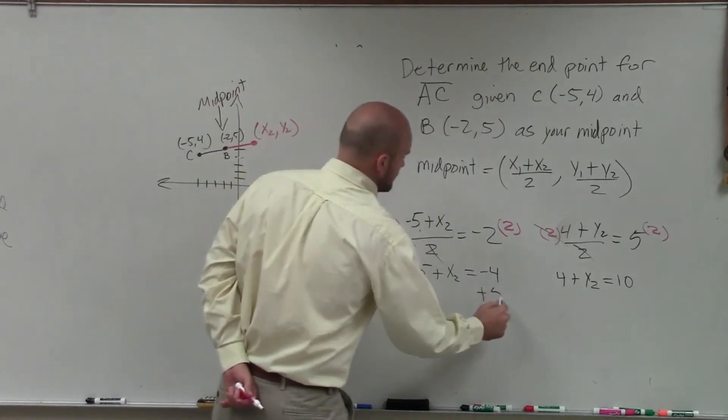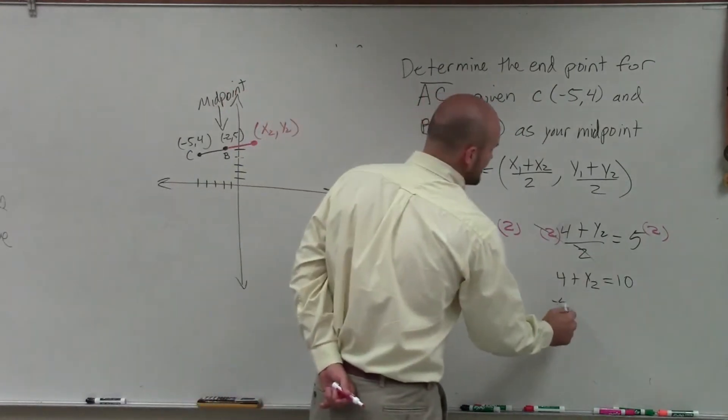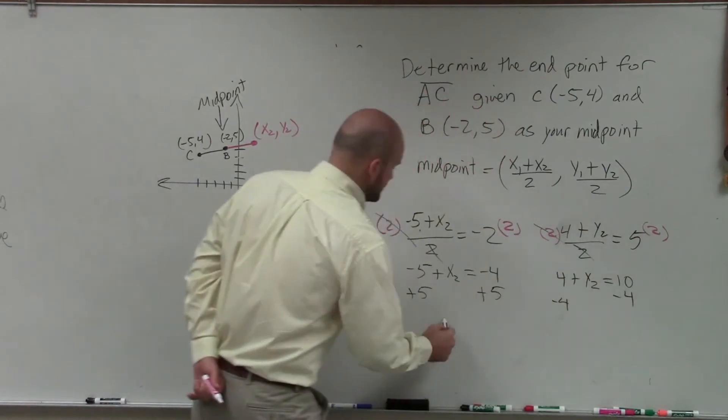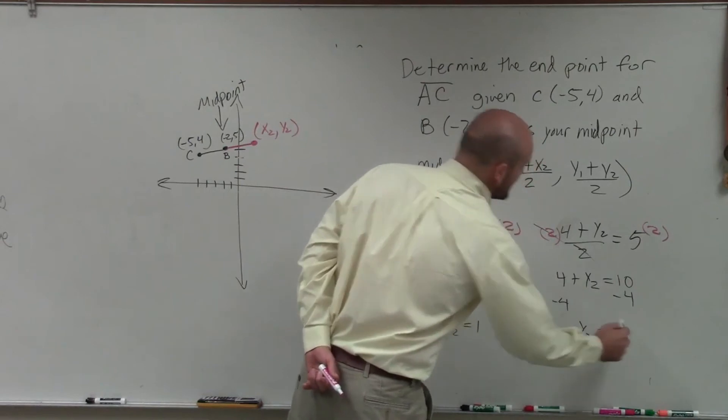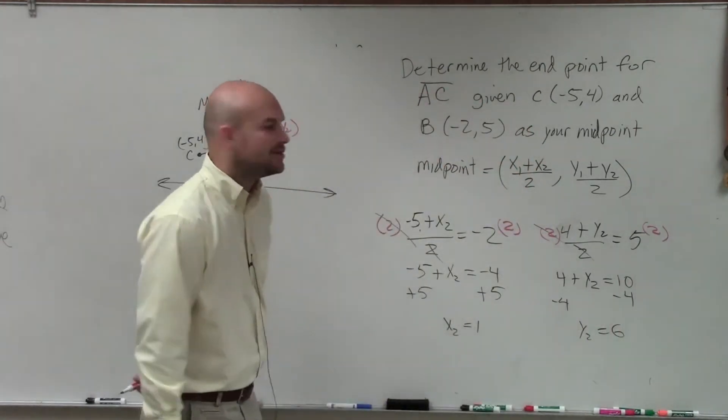Here, I'm left with a 4 plus y2 equals 10. Now, to solve for x2, I add 5. Here, to solve for y2, I subtract 4. So therefore, x2 equals 1. Here, y2 equals 6. And that's your endpoint.